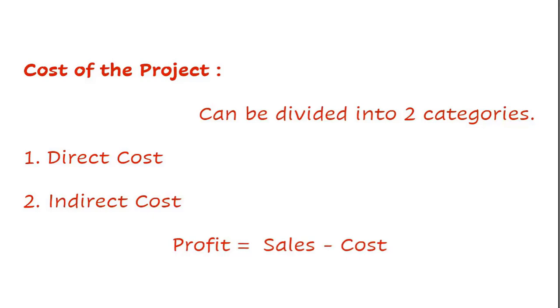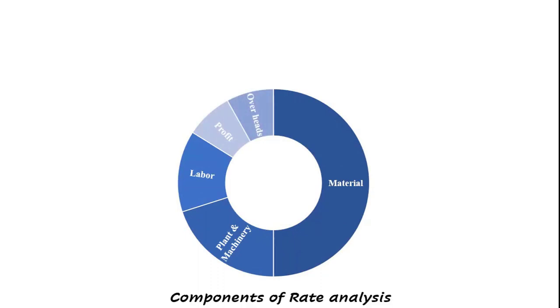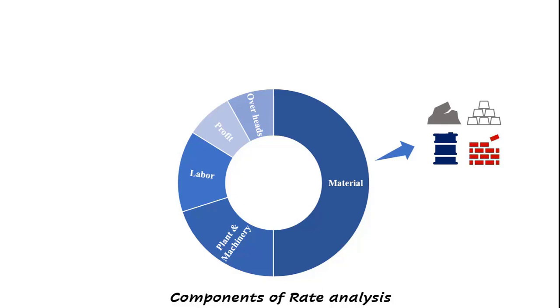Profit is equal to sales minus cost. There are five components in rate analysis. The first is material — the material cost consists of the cost of materials used for the work, such as cement, aggregate, and admixture for concrete works, or cement, bricks, and aggregate for brick work.